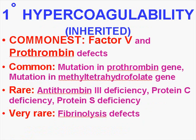Looking at inherited hypercoagulability factors, the single most common is a genetic deficiency of Factor V. On board questions involving an inherited or genetic coagulation problem, it's most likely going to be either Factor V or prothrombin, as those are the most common. It's also fairly common to have mutations in the prothrombin gene or mutations in the methyltetrahydrofolate gene.